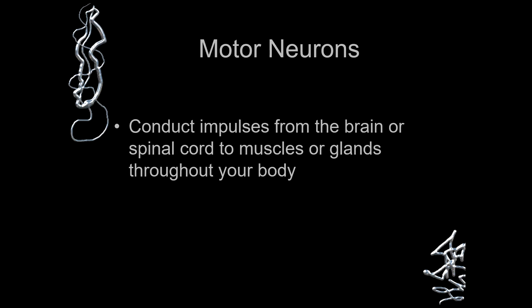Motor neurons conduct impulses from the brain or the spinal cord to the muscles or the glands throughout the body. At the molecular level, motor neurons send that signal wherever it is required — for example, if a person is trying to apply force to move a car or a rock, there is some energy required. Impulses are sent to supply energy in the form of ATP, or adenosine triphosphate, which is the chemical generating energy throughout the body. Glycogen produces ATP. So these motor neurons conduct impulses from the brain or spinal cord to the muscles or glands throughout the body.